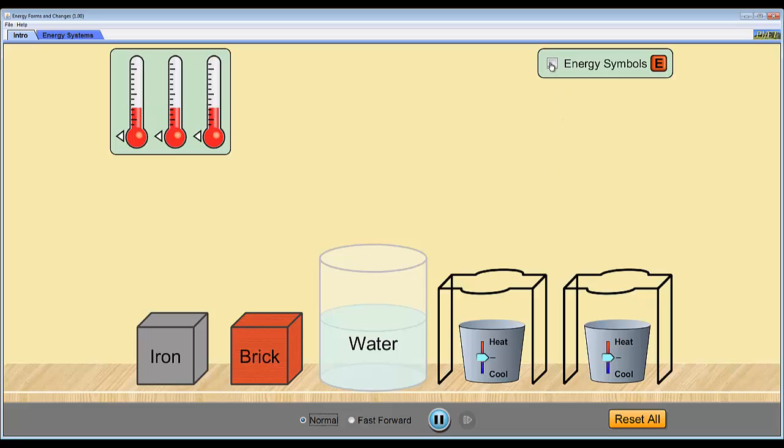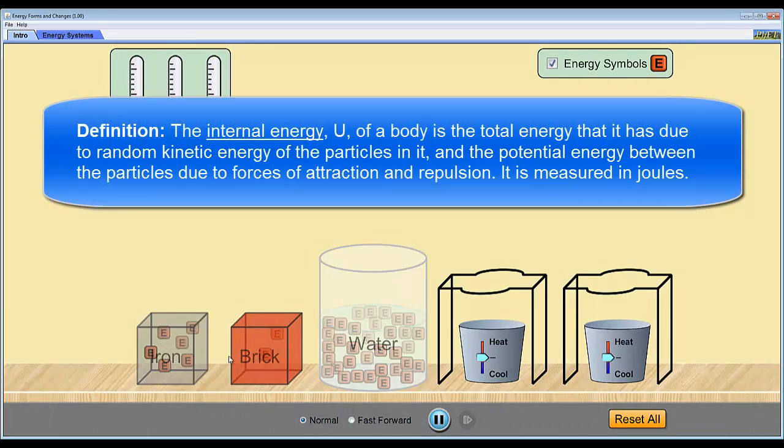And what I'm going to do is just check this energy symbols box and what this does is it gives us an indication of how much energy is in each of these objects. What might be surprising is that there's energy, it doesn't appear to be any energy, it's a block that's sitting still. However, because of the vibration and motions of the particles within the objects and the forces of attraction between the particles, there is what we call internal energy in each of these objects.